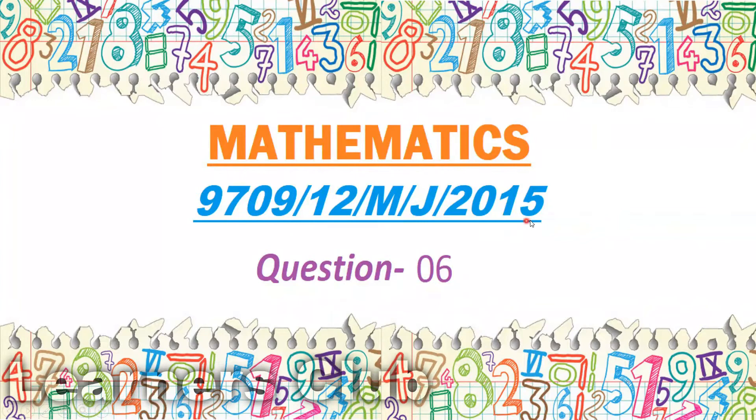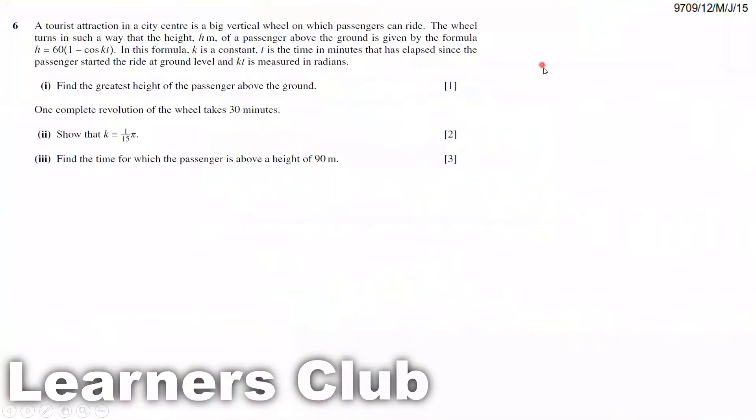Mathematics major 2015 question 6. A tourist attraction in a city center is a big vertical wheel on which passengers can ride. The wheel turns in such a way that the height h meters of a passenger above the ground is given by a formula.